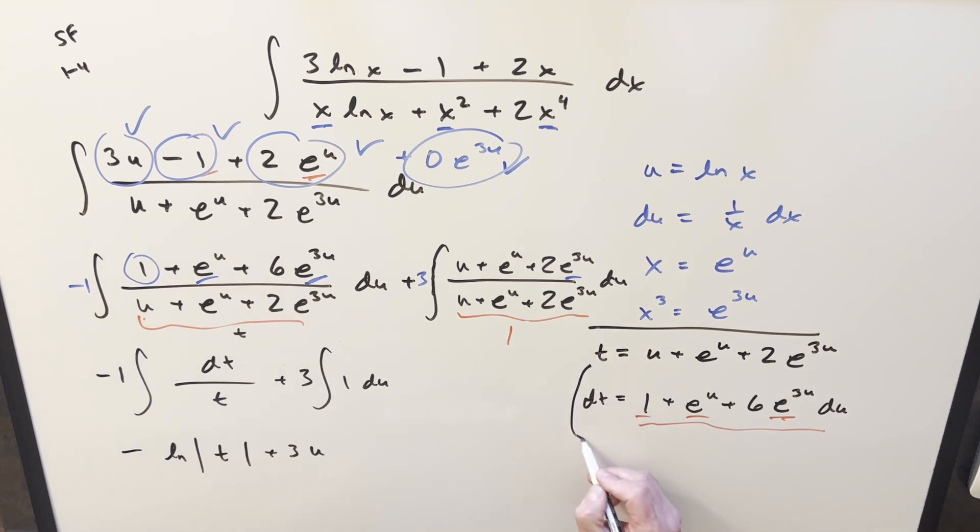We need to back substitute on it, but let's get t all the way back to x. So t, we kind of have to plug back in here. So the u value is, this is just going to be lnx, e to the lnx, that's just an x. And then e to the three, we can use this right here. This is an x cubed, so this is going to be two x cubed. So we'll use this to back substitute. So putting it all together for my final solution, we have minus natural log absolute value lnx plus x plus 2x cubed plus three times our u value lnx, add a plus c, and that's it.